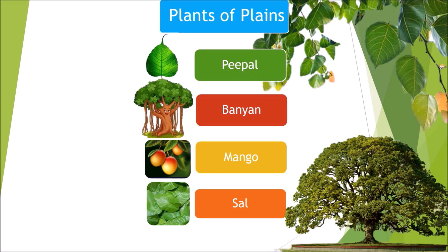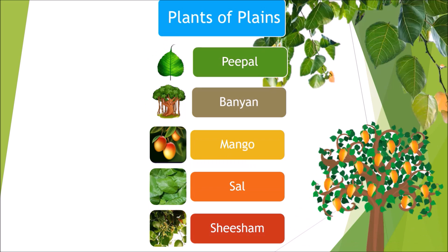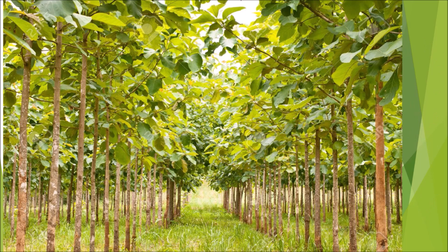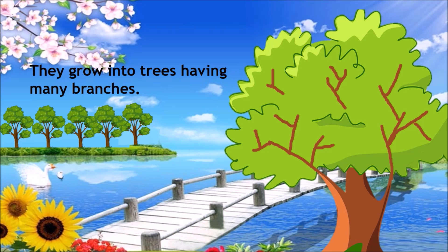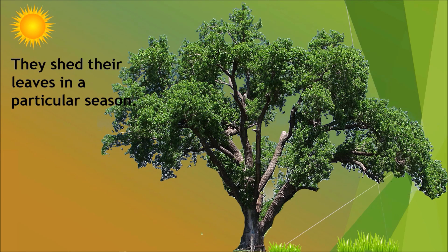Peepal, banyan, mango, and shisham are some of the plants found in plains. They grow into trees having many branches. They shed their leaves in a particular season.